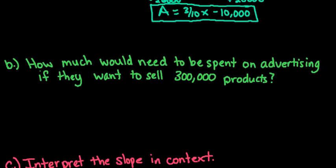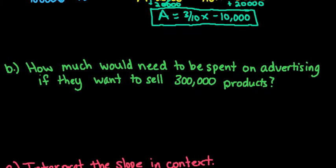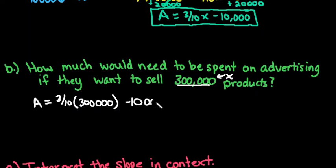So the second question that we are asked is how much would need to be spent on advertising if they want to sell 300,000 products. So what we want to do is find a if x is 300,000.